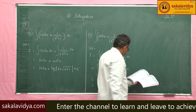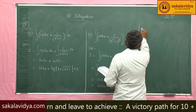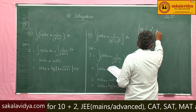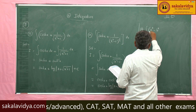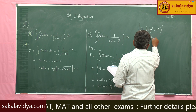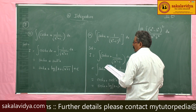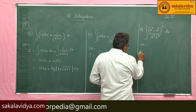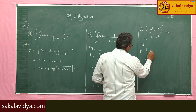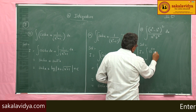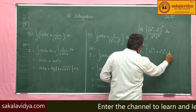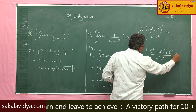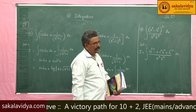Thirteenth problem: evaluate the integral of (aˣ - bˣ)² / √x dx. Solution: I is equal to the integral of (a²ˣ - 2·aˣ·bˣ + b²ˣ) / (aˣ·bˣ) dx. Now let us separate the terms.